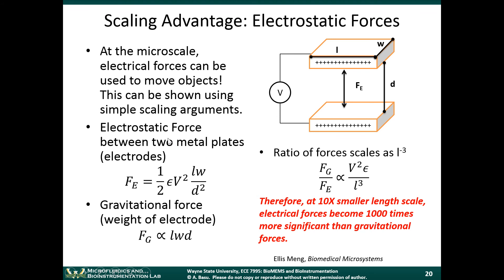If we were to take two metal plates and place them next to each other, what type of device is that? A capacitor — two metal plates with a dielectric material in between. Dielectric material is an insulating material. You can make capacitors with air in between. And you can apply all the standard capacitor analysis equations to derive the electrostatic force generated between those two capacitor plates.